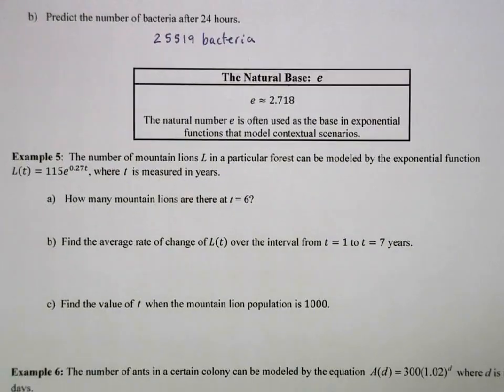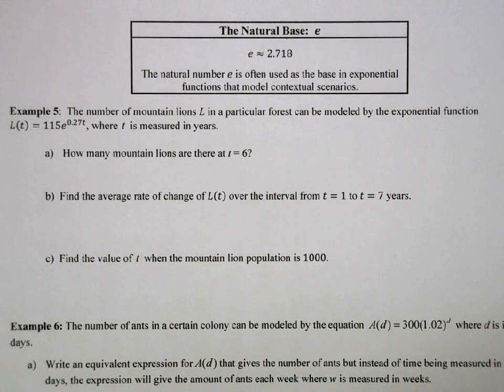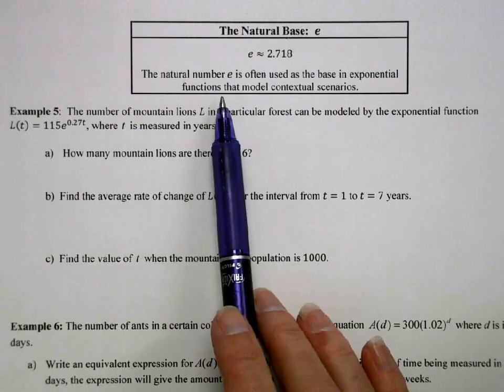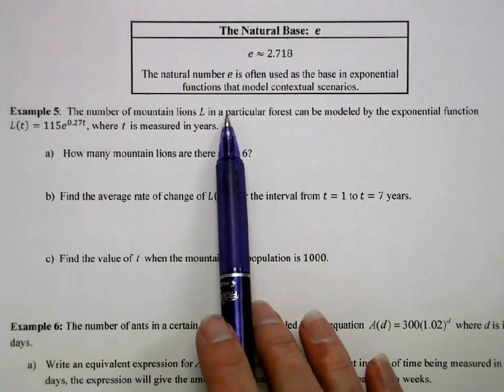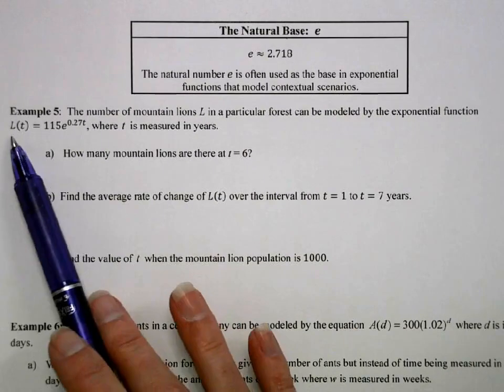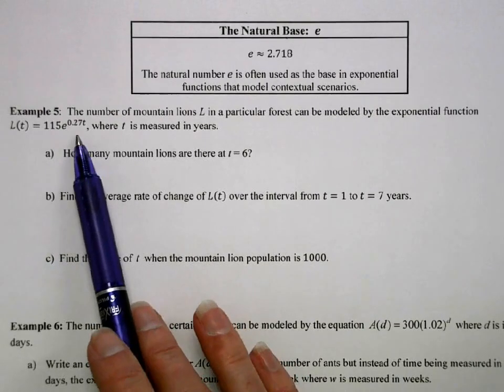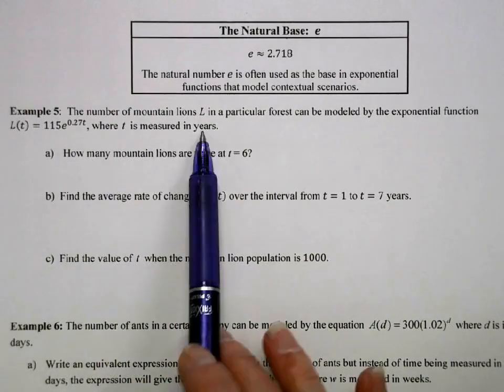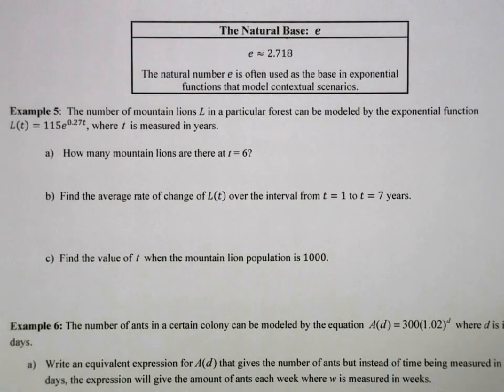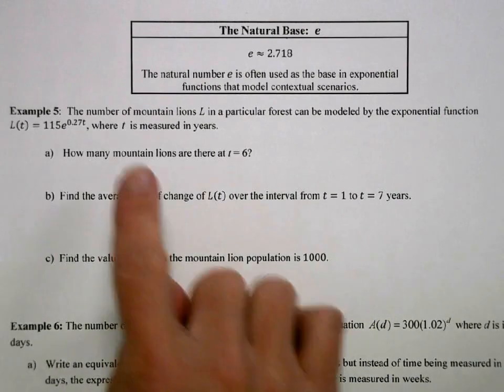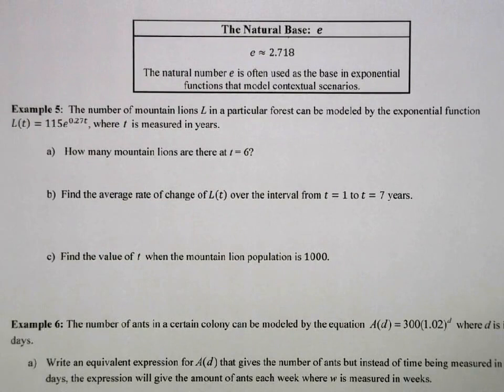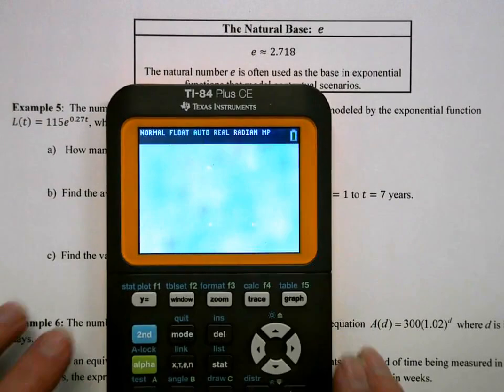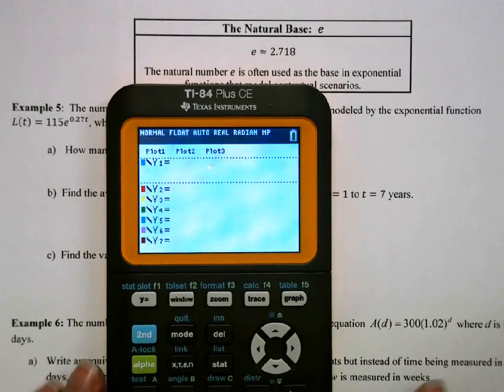e is the natural base. And you've probably seen this before, like in Algebra 2. But it's a natural growth constant, and it's used in a lot of exponential functions as the base. So I've got a scenario. The number of mountain lions in a particular forest can be modeled by the exponential function L(t) = 115e^(0.27t), where t is measured in years. We want to know how many lions there are at t equals 6. And looking here, I have a lot of problems that we're going to be using this same equation. So one strategy is to store, I'm going to get rid of that regression equation, store your equation in y1.